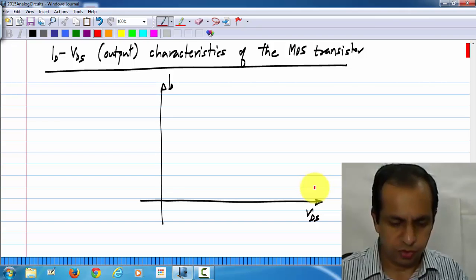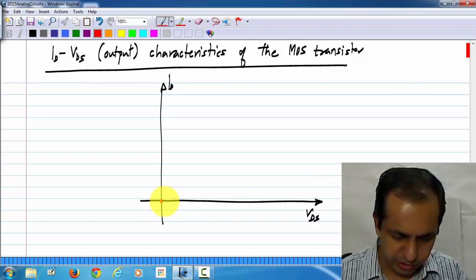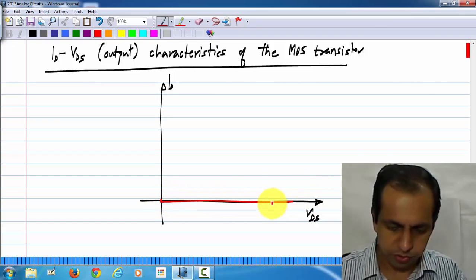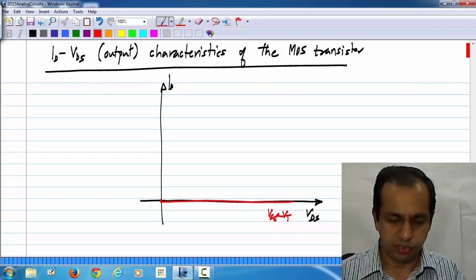We had a family of curves for different values of VGS. And of course, for VGS less than VT, the current would be zero.